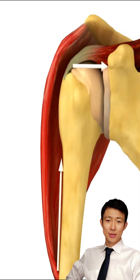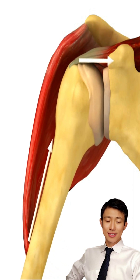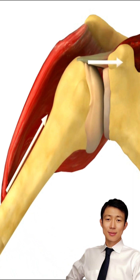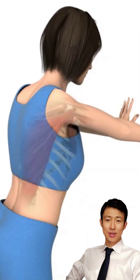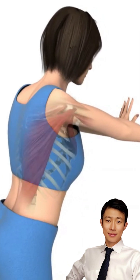Strengthening the rotator cuff muscles is important; however, exercises must be biomechanically sound. Future videos will demonstrate these recommended exercises. Tears are classified into crescent-shaped and U-shaped configurations.